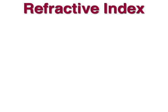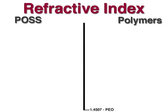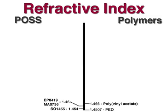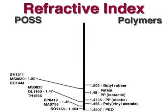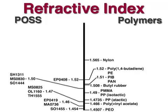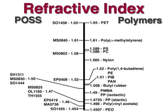When blending other materials with polymers, it is often important to match the refractive indices to avoid making a hazy or opaque product. By changing the R groups on POSS, the refractive index can be varied within the range of polymeric materials. But if domains are smaller than the wavelength of light, clear materials may be produced without matching refractive indices.